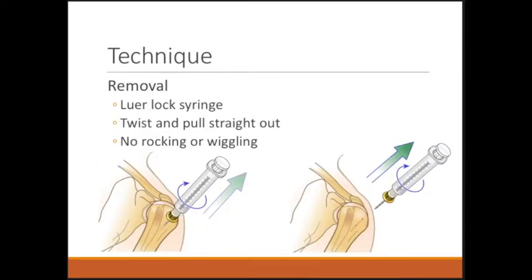When you're done with the IO catheter, grab a regular luer lock syringe, then twist and pull straight out. Be sure not to rock or wiggle the needle as you're pulling out, as you don't want to disrupt or cause microfractures to the trabecular bone.